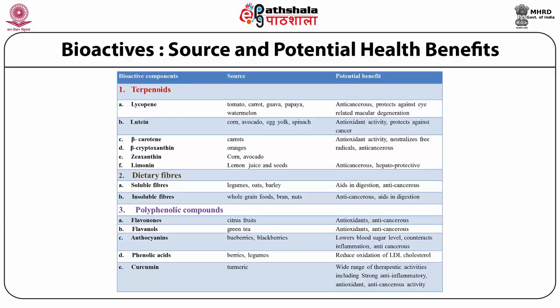The table here enlists the bioactives which are key sources of nutraceutical compounds, their source, and their potential health benefits. Broadly these bioactives can be classified into terpenoids and polyphenolic compounds, with another category of dietary fibers. Talking about terpenoids, lycopene is the nutraceutical prevalent in tomatoes — the red color of tomatoes is due to lycopene and it is known to have anti-cancerous properties. Lutein is another terpenoid prevalent in corn, avocados, egg yolks, and spinach, with significant antioxidant properties and protection against cancer.